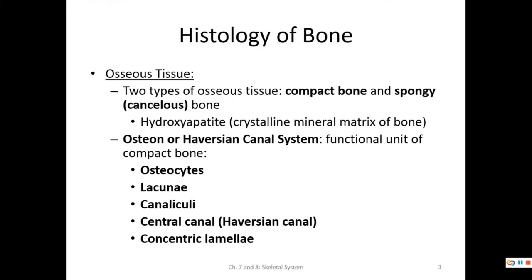The osteon contains osteocytes — cells found in chambers called lacunae. The canaliculi are small canals that allow nutrients and materials to reach the lacunae and osteocytes. The central canal in the middle is called the Haversian canal, and the Haversian system is built around this canal with rings called concentric lamellae. This was covered in the histology section.